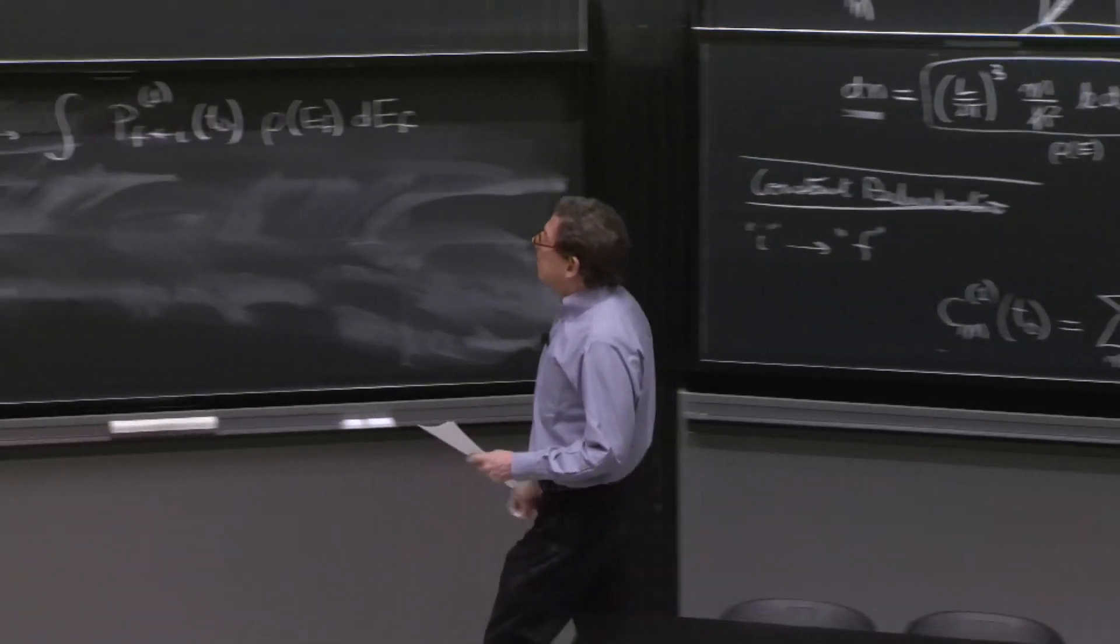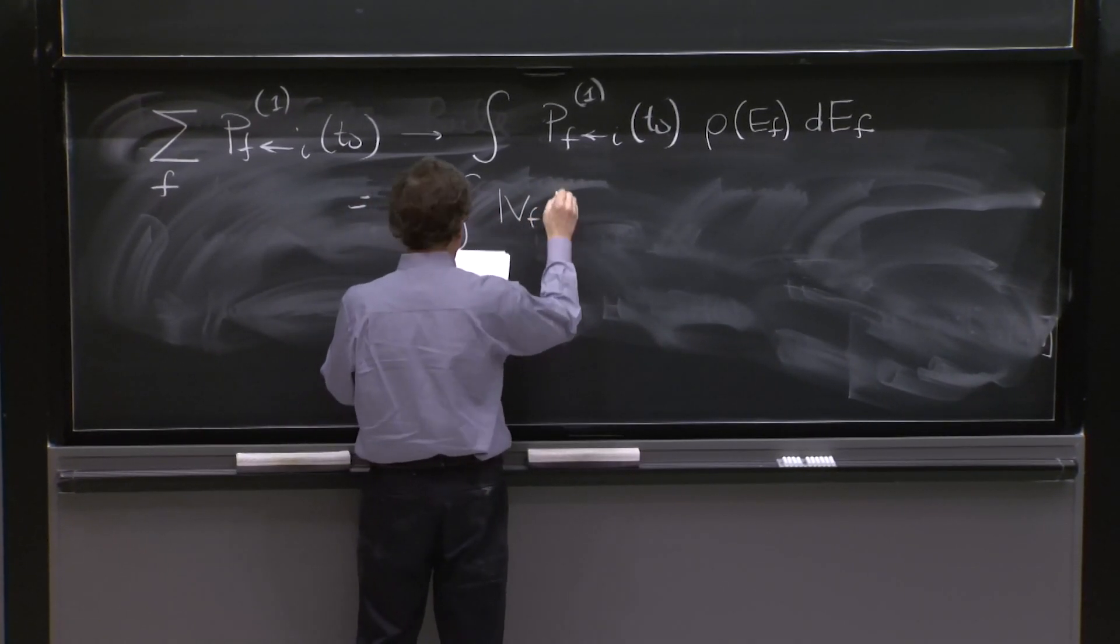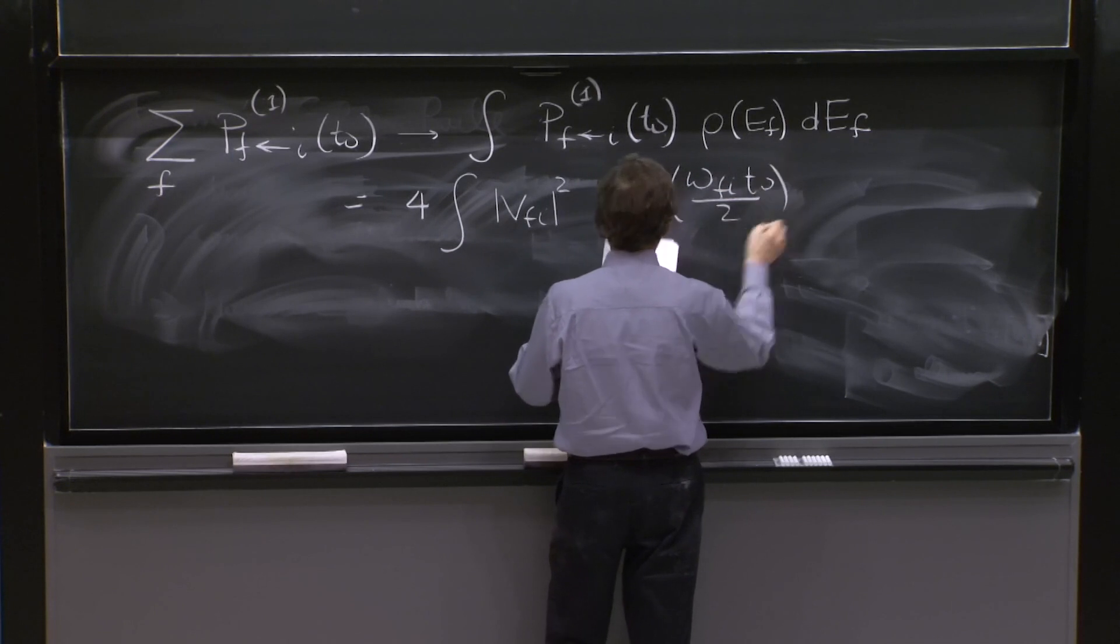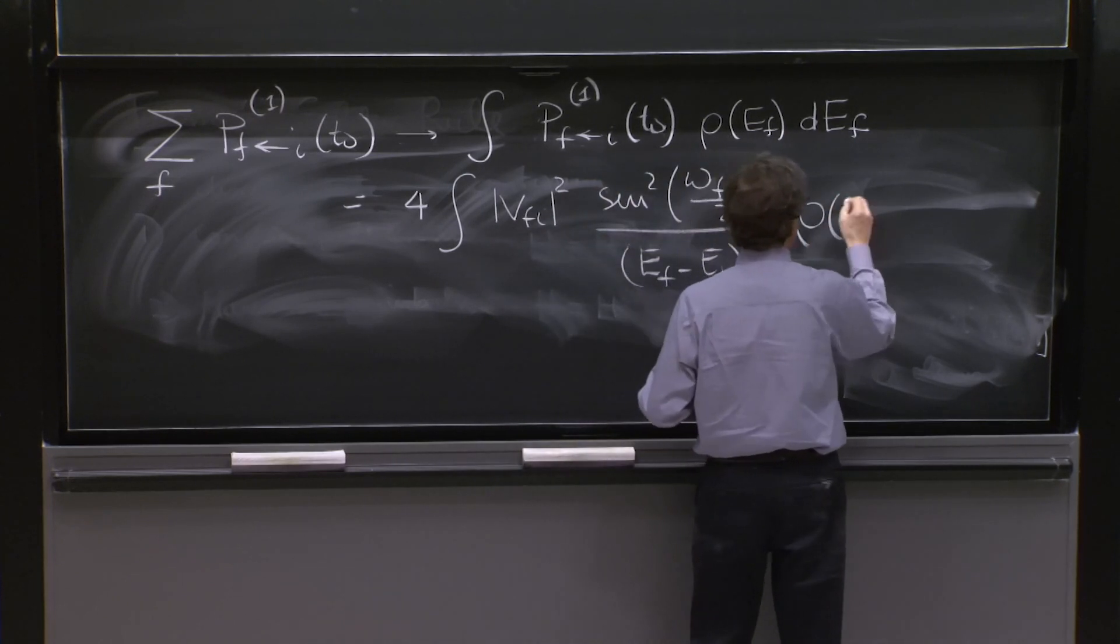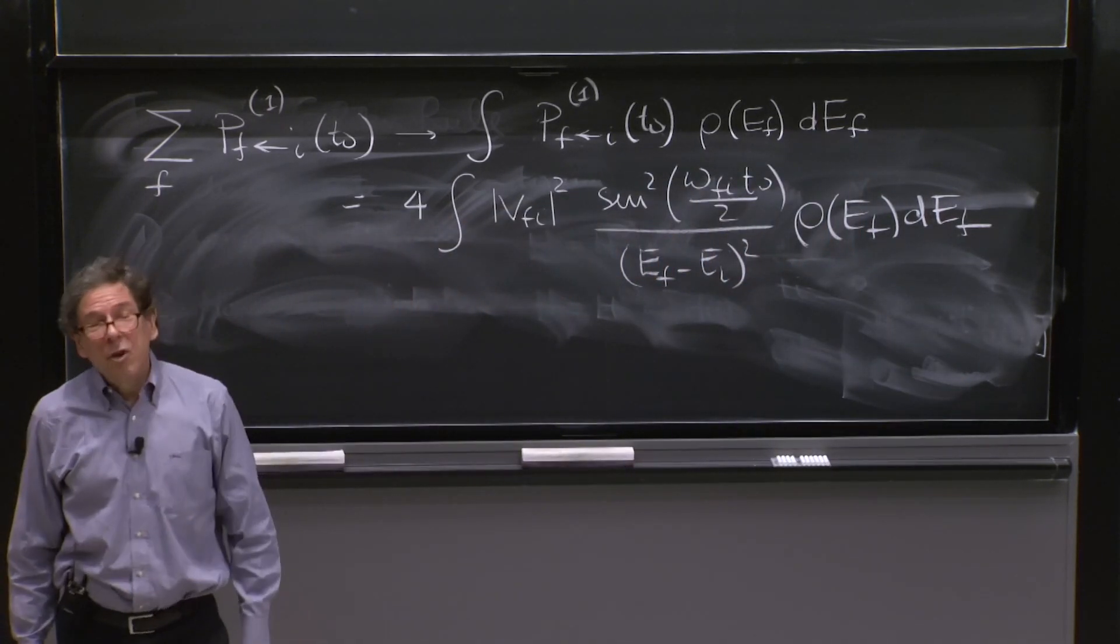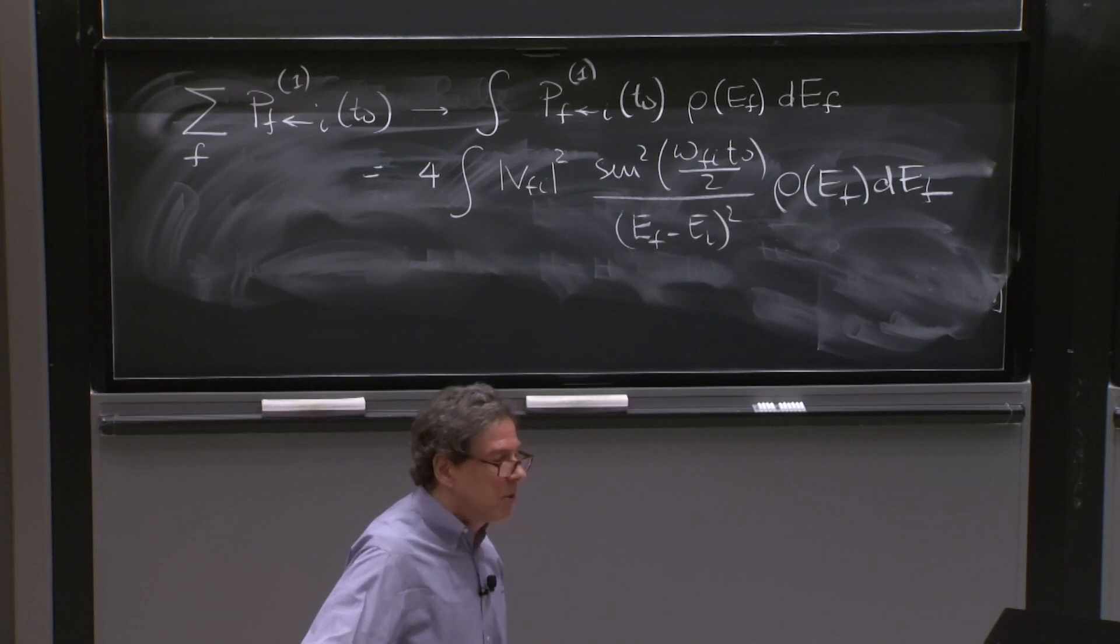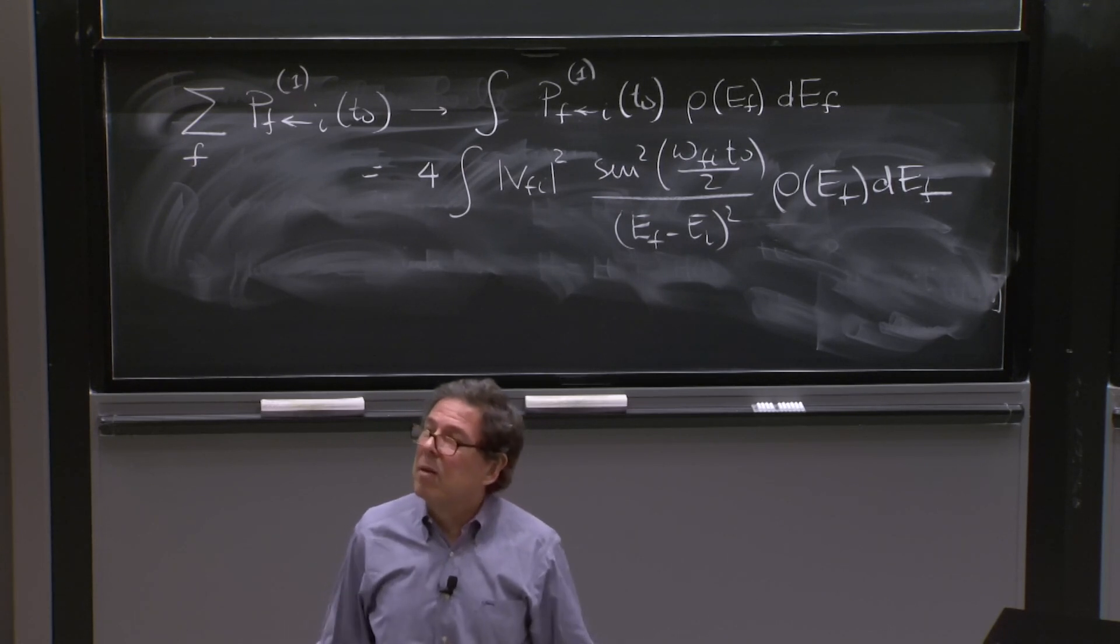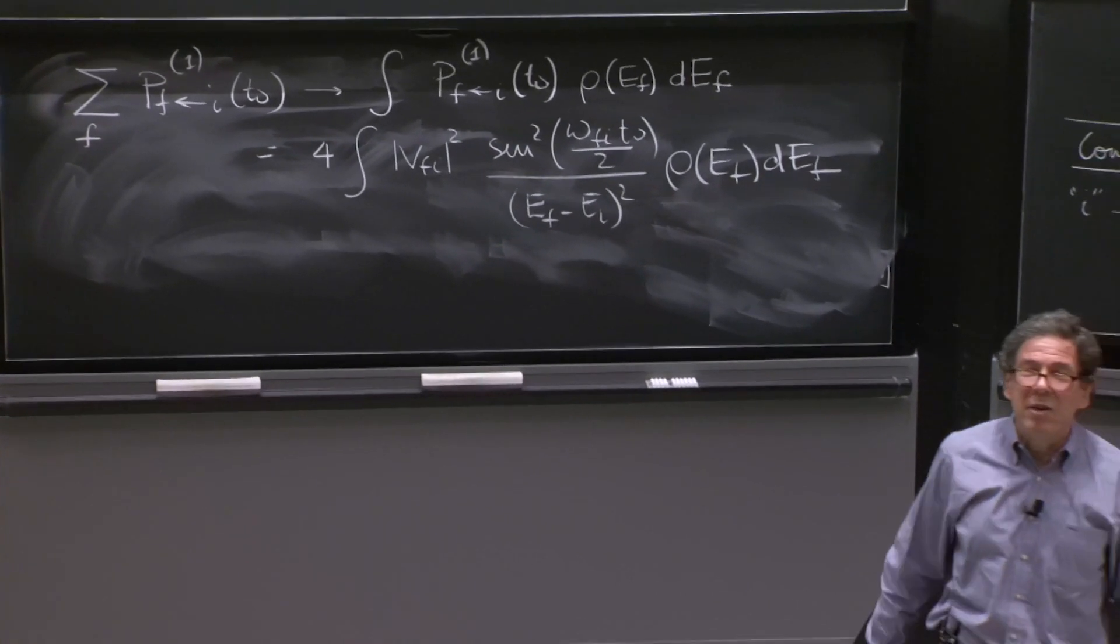So then this whole transition probability will be 4 integral. I'm writing now the integral. I want VFi squared sine squared omega Fi t naught over 2, EF minus EI squared, rho of EF d of EF. And you would say at this moment, OK, this is as far as you go. So that must be Fermi's golden rule. Because we don't know rho of EF. It's different in different cases. So we have to do that integral and we'll get our answer. But the great thing about this golden rule is that you can go far, and you can do the integral.